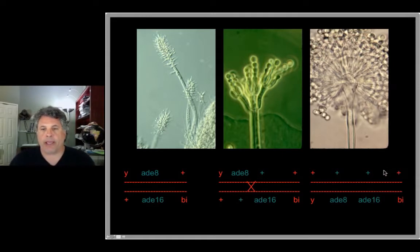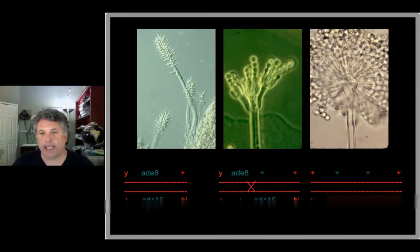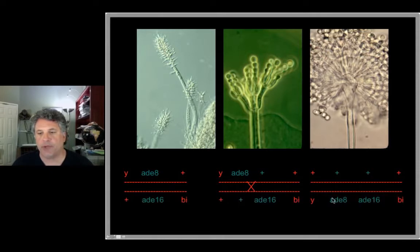By observing the phenotypes of large numbers of conidia on media supplemented with adenine or media without supplemented adenine, it was observed that at some low frequency you could obtain conidia that could grow on adenine-minus media. That was because we were basically heterozygous for both of these mutant alleles of the gene and we were able to restore a functional gene.